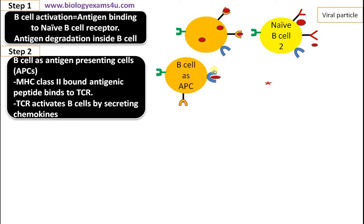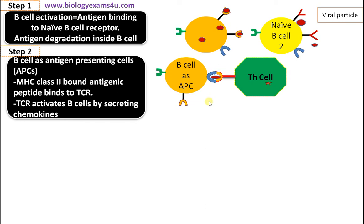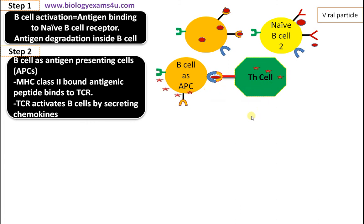This is how B cell acts as an antigen presenting cell. The viral particle, or antigenic peptide, presented on MHC class 2 is recognized by T helper cells. T helper cells can only bind to antigenic peptides bound to MHC class 2. On binding, T helper cells secrete many chemical messengers called chemokines, including interleukins, which further activate these B cells.